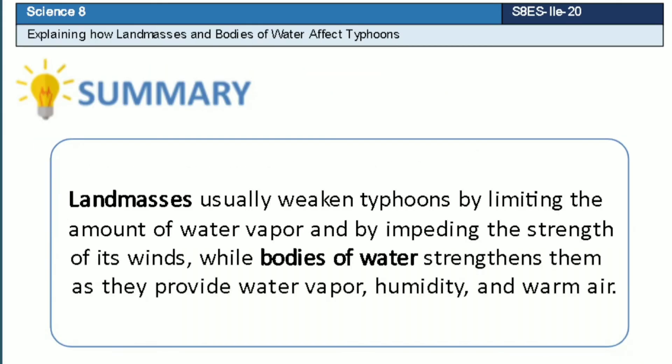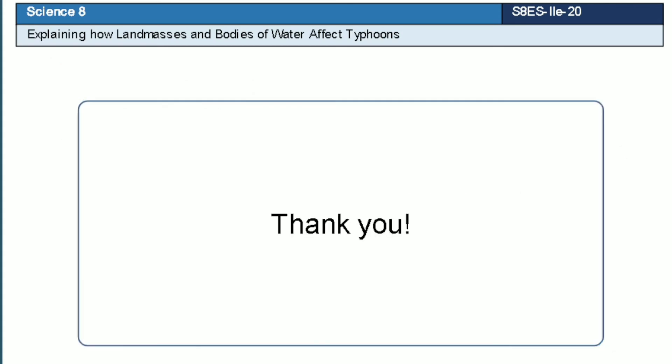In summary, landmasses usually weaken typhoons by limiting the amount of water vapor and by impeding the strength of its winds, while bodies of water strengthen them as they provide water vapor, humidity, and warm air. This is the end of the presentation. Thank you.